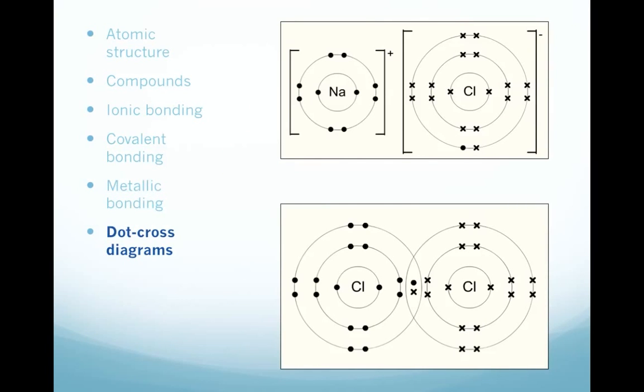So, just to recap, you need to be able to draw dot-cross diagrams for either ionic or covalent bonds. Just look at these two diagrams. The top one shows sodium chloride, NaCl. This is an ionic compound. You can tell that because it's a metal and a non-metal. And notice how there are brackets drawn around each ion to indicate that that positive or negative charge is held by the whole object. And you can see that the chlorine has one of the electrons shown as a dot to indicate that it's come from the sodium atom.